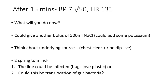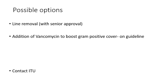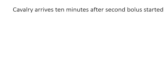Consider what type of bacteria are in the gut — usually gram-negatives. Possible management options include line removal with senior approval — definitely consider this in this patient. Additional vancomycin to boost gram-positive cover is on the guideline and is sensible. If the BP continues to drop, you can consider an aminoglycoside. Gram-negative sepsis is notorious for dropping blood pressure — those bugs release massive amounts of toxins like lipopolysaccharide, causing massive vasodilation. Gentamicin is the aminoglycoside of choice in the Trust and could be considered with senior input, though it's not on the standard guideline. Meropenem should cover gram-negatives. Contact ITU — that's probably the priority here.